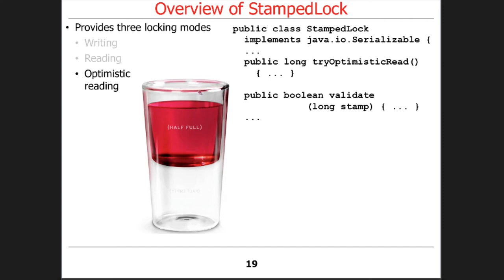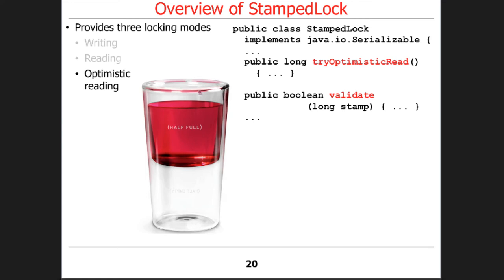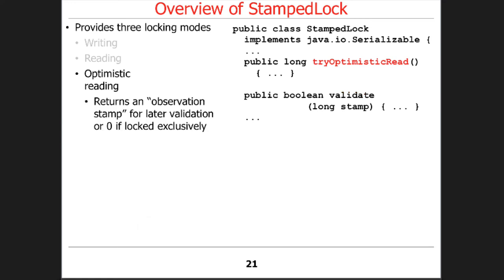The third mode is the most interesting of all: optimistic reading mode. This is the major difference between a StampedLock and a ReadWriteLock — this notion of optimistic reading. There are two methods: the first one, tryOptimisticRead, is not going to block at all. What it does is give you back something called an observation stamp, which contains enough information that it can be checked later at the appropriate time.